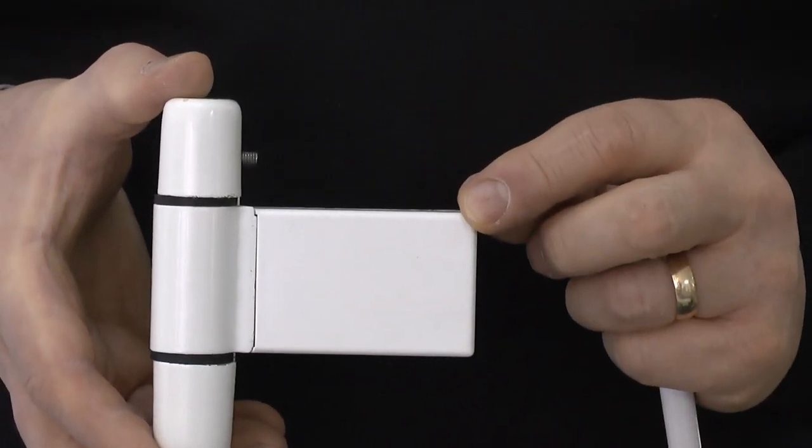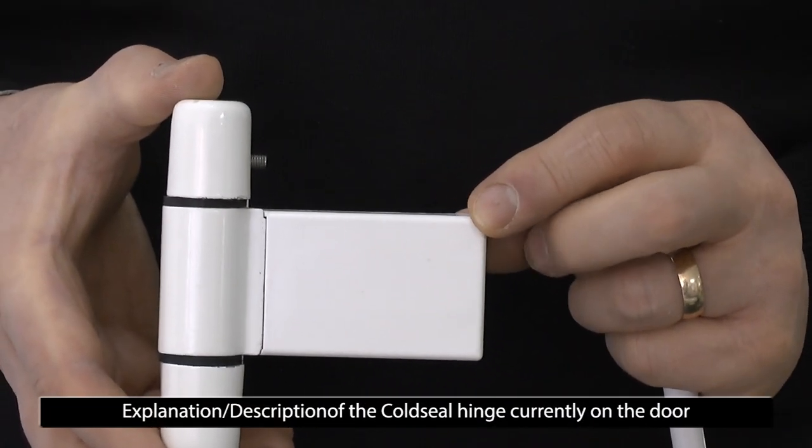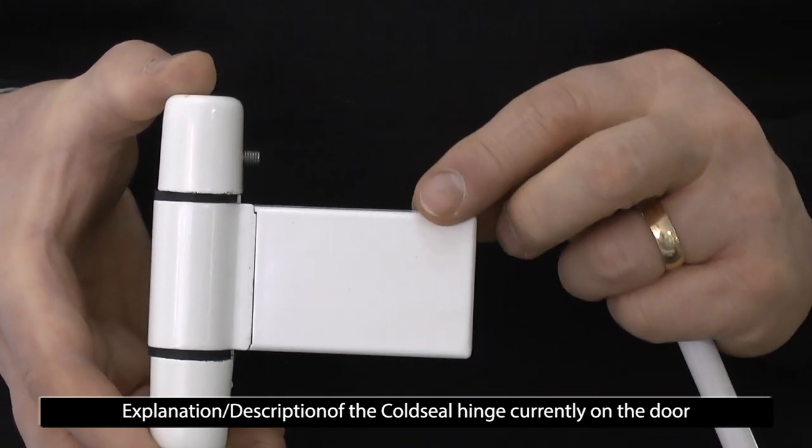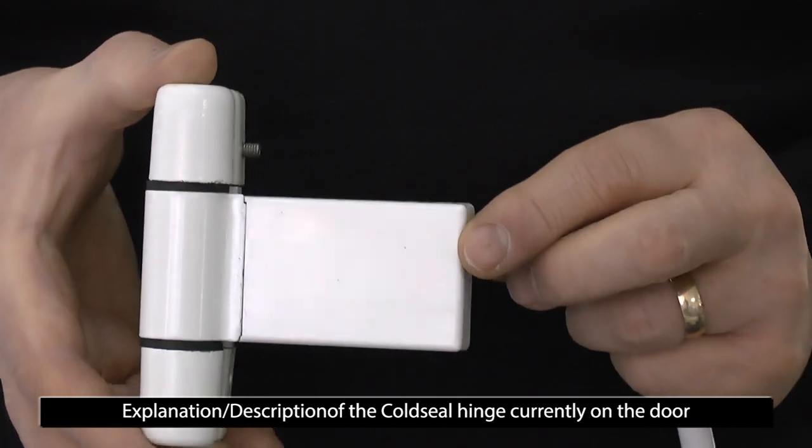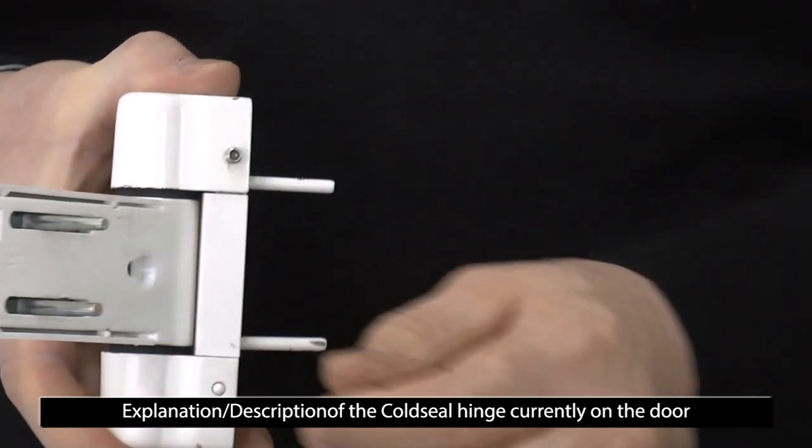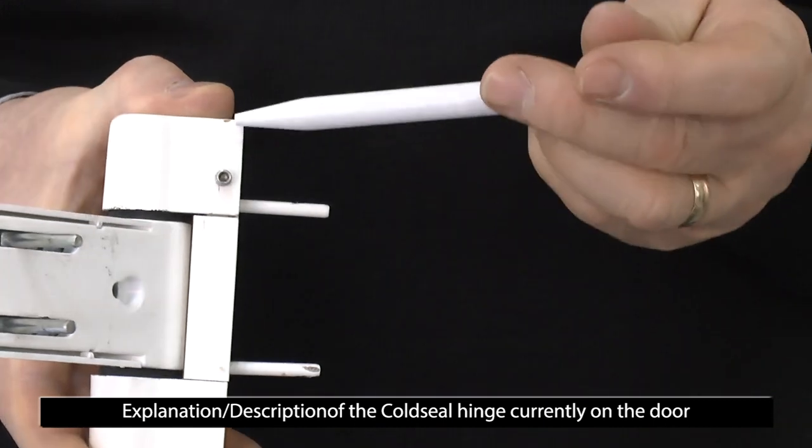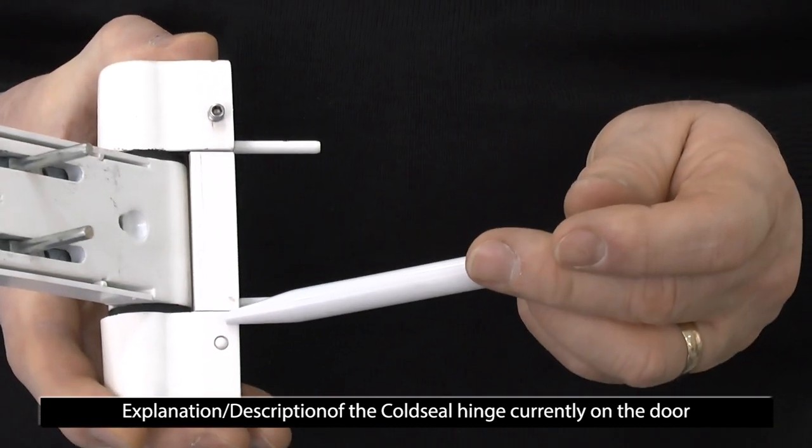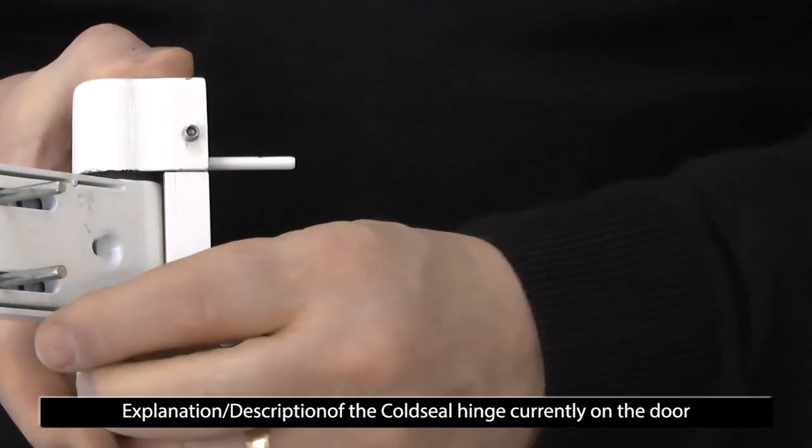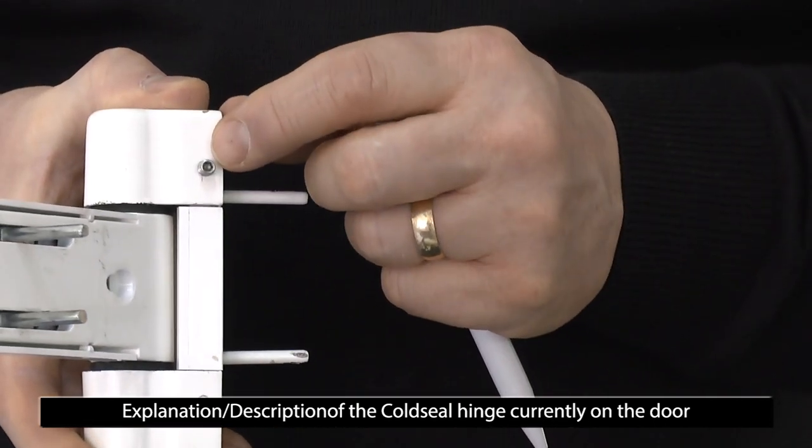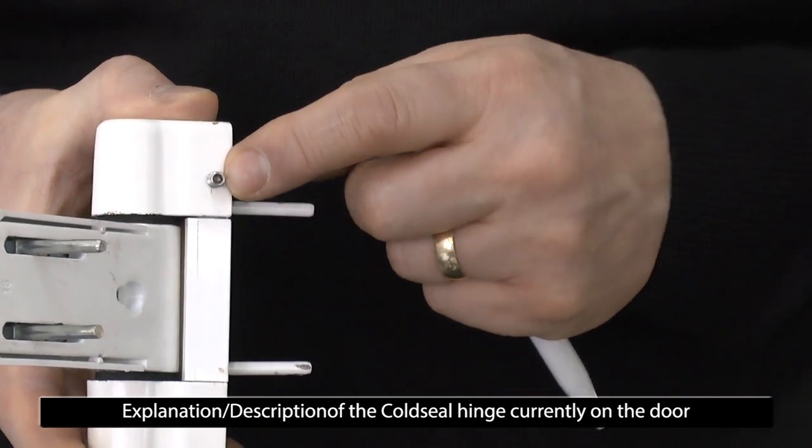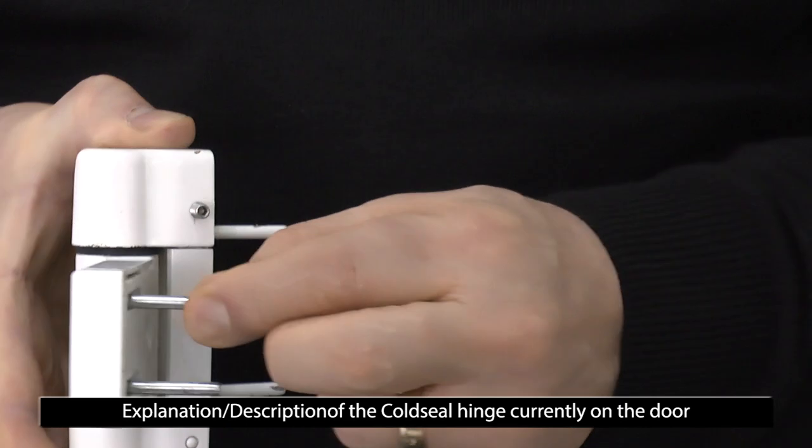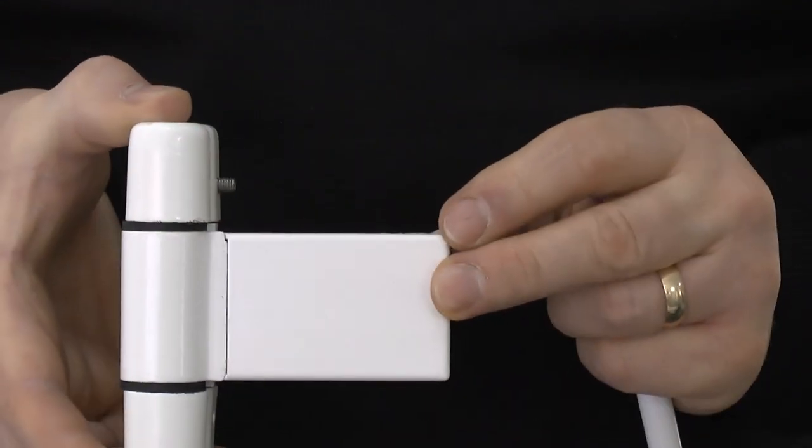These are the hinges that we're looking at, most commonly used in the 80s and 90s by both cold seal and Anglian. The telltale on this hinge is that if you open the door, you'll see a grub screw here and a dummy stud at the bottom. This allows you to remove the hinge in a methodical manner.